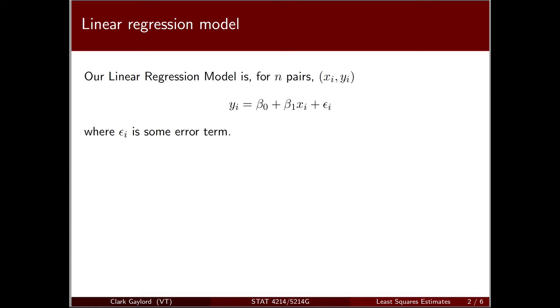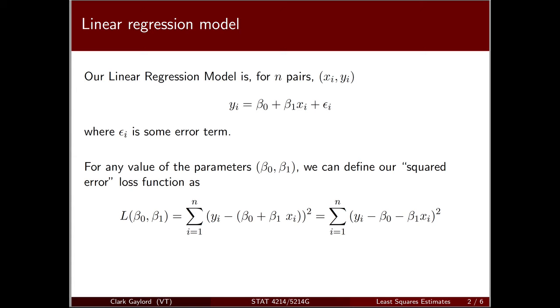There's some error term left over, some residual between our fitted predicted y (beta0 plus beta1xi) and our actual observed yi's. So how close is a particular line to our actual data? We have the squared difference between predicted and observed values, summed up. This gives us a squared error loss function.